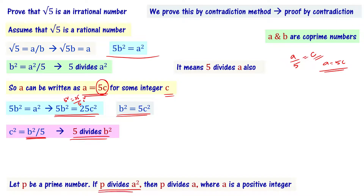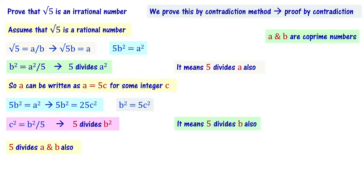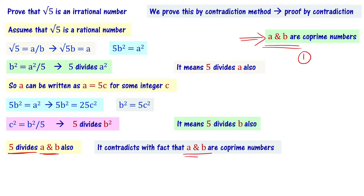As per this theorem, if p is a prime number and p divides b square, then p divides b also. Since 5 is a prime number, 5 divides b also. So 5 divides a and 5 divides b, meaning 5 is a common factor of both a and b. But we said a and b are co-prime numbers, meaning only 1 is a common factor of a and b. This contradicts our definition that a and b are co-prime numbers.